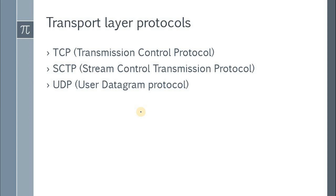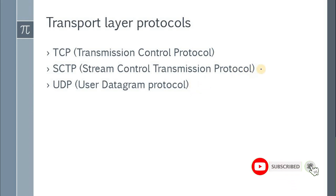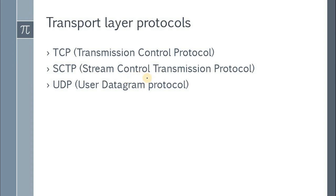In the transport layer, there are three major protocols. First is TCP — Transmission Control Protocol — which is a reliable, connection-oriented protocol. Second is UDP — User Datagram Protocol — which is connectionless and unreliable. Third is SCTP, which combines features of both TCP and UDP. We will study these transport layer protocols in detail in coming lectures.